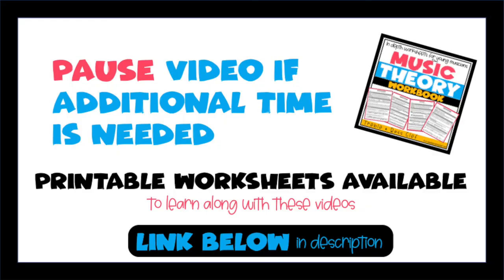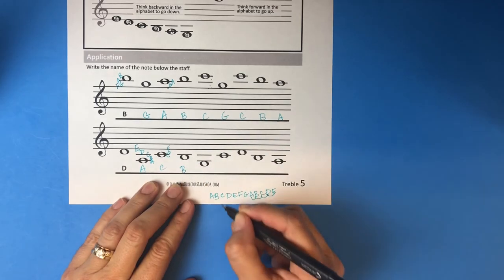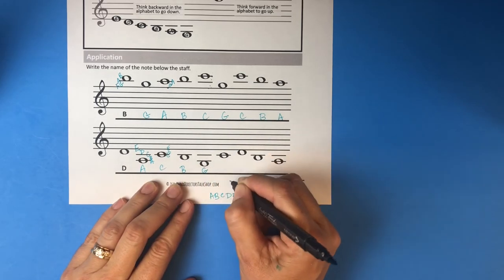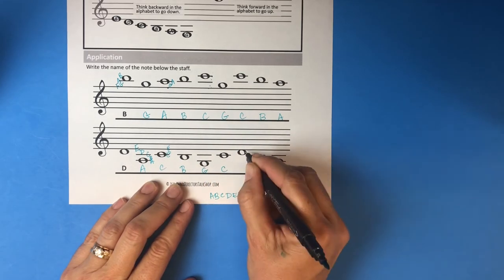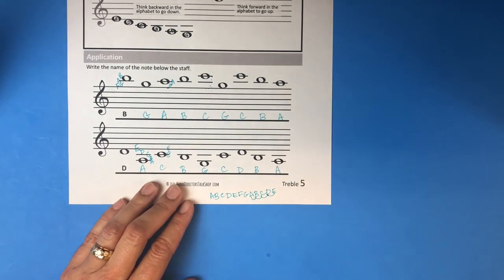All right, so just to double check, this should be a B, G, C, D, B, and A.